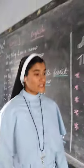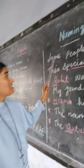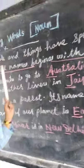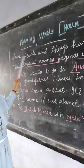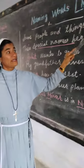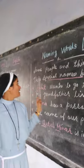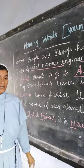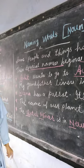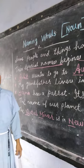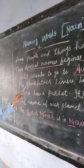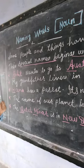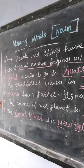In naming words, there are some specialties. Some people and things have special names. These special names begin with a capital letter. When special names are written, they start with a capital letter.